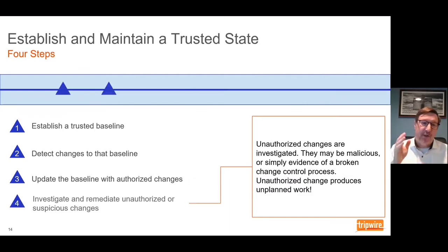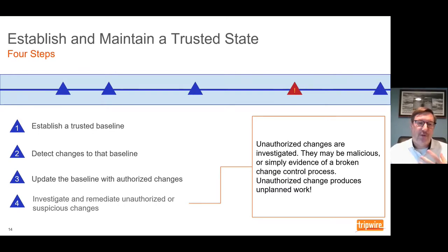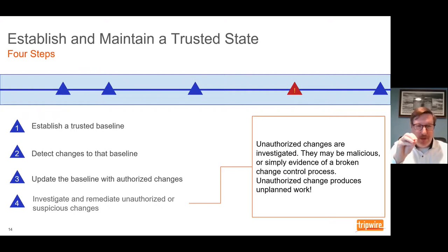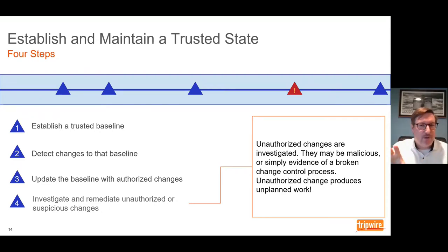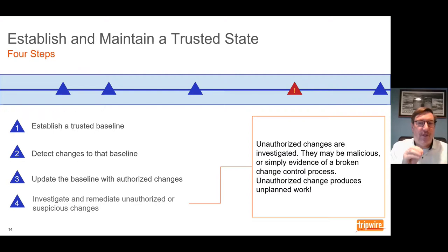Last but not least, you want to investigate and remediate unauthorized or suspicious changes. The changes that aren't authorized become automatically flagged as unauthorized — those are the changes you want to focus your attention on. Automate authorization, focus attention on unauthorized or suspicious changes, and determine whether they should have been authorized, whether they're evidence of a broken change control process, or whether they're malicious changes that need to be addressed as an incident. Keep in mind that unauthorized change, regardless of whether it's malicious, ultimately creates unplanned work. This process of integrity monitoring reduces unplanned work in an environment.